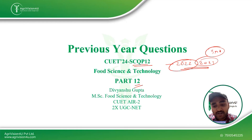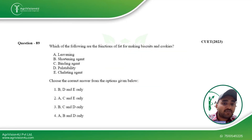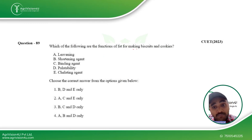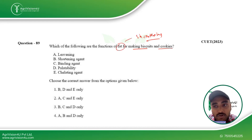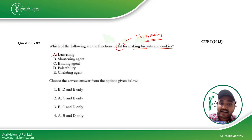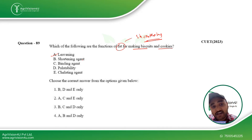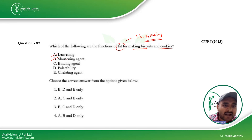Coming straight to the question: which of the following are the functions of fat for making biscuits and cookies? Fat acts as a shortening agent and also as a leavening agent, because when we are whipping it we are incorporating air inside it. So fat acts as a leavening agent and a shortening agent.